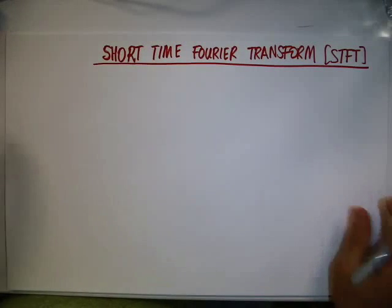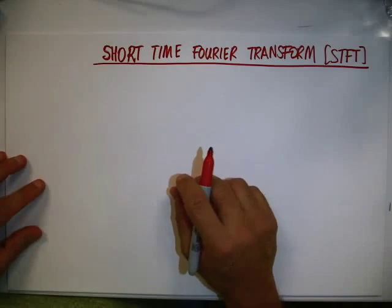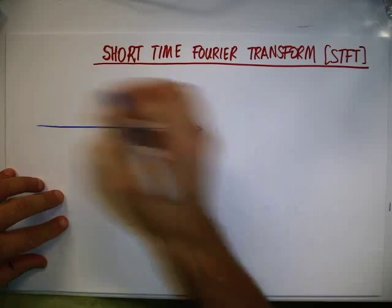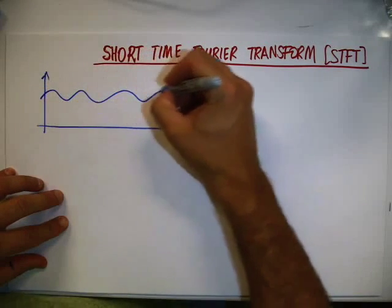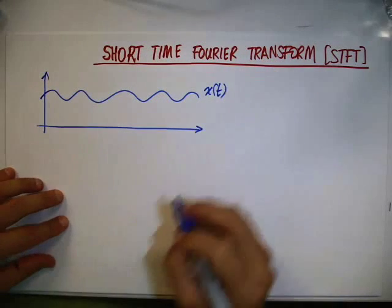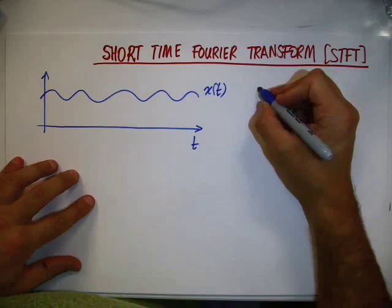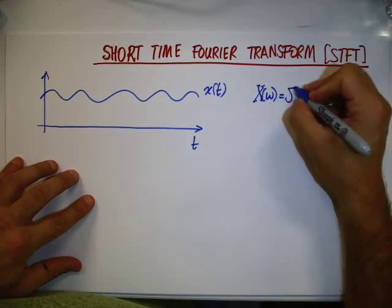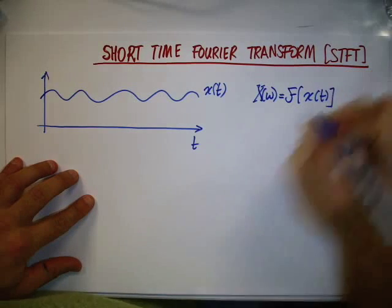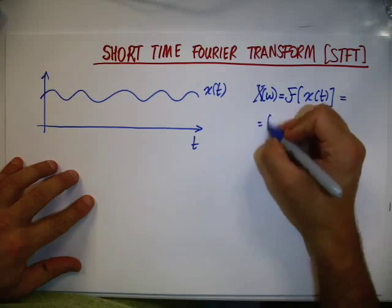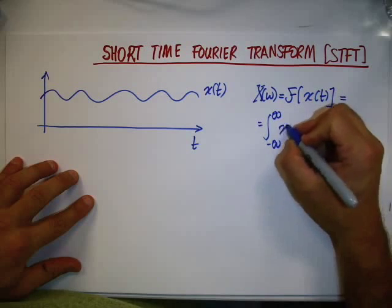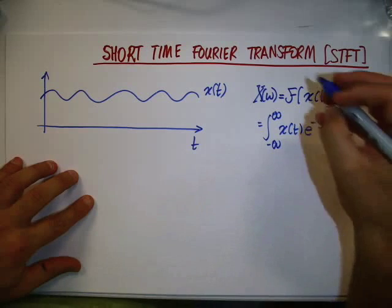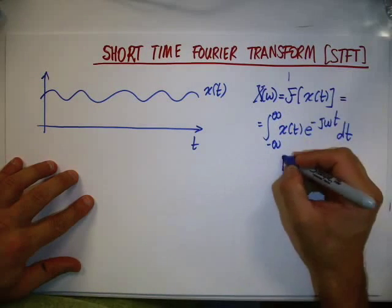Let's introduce the short-time Fourier transform. Consider a signal x of t, a continuous signal. We already know that the corresponding Fourier transform, x of omega, is given by the integral between minus infinity and infinity of x of t times e to the minus j omega t dt. This is the Fourier transform.